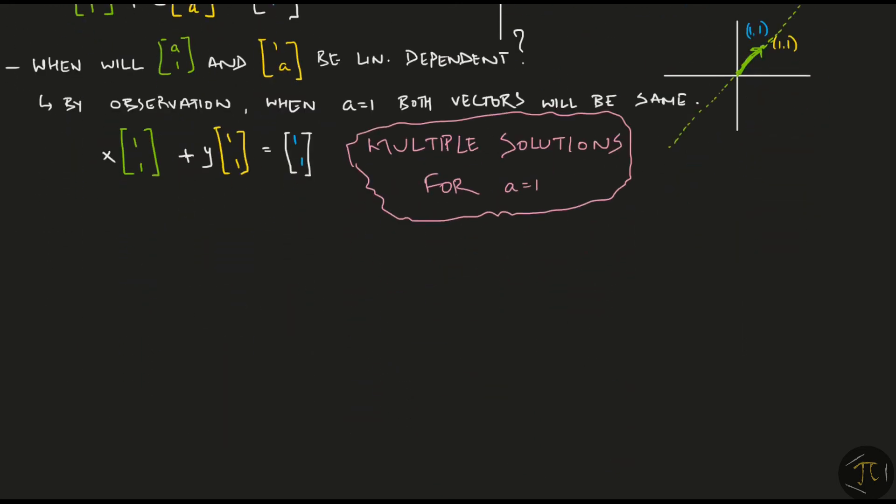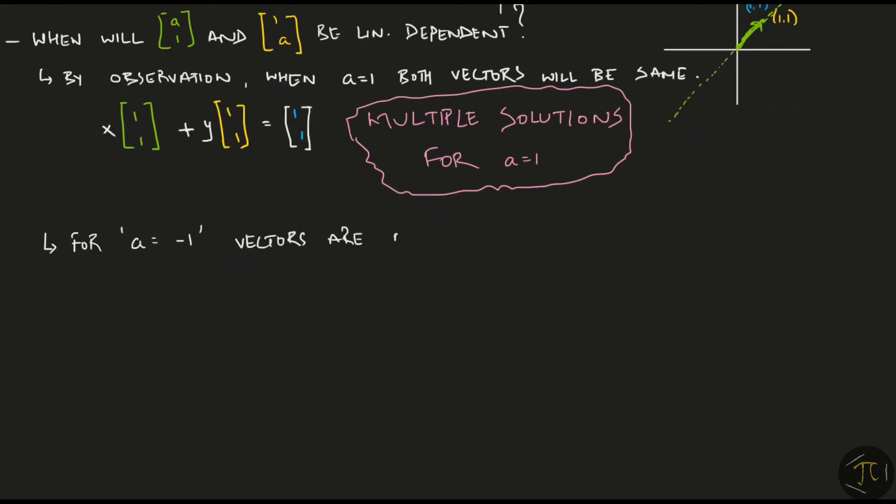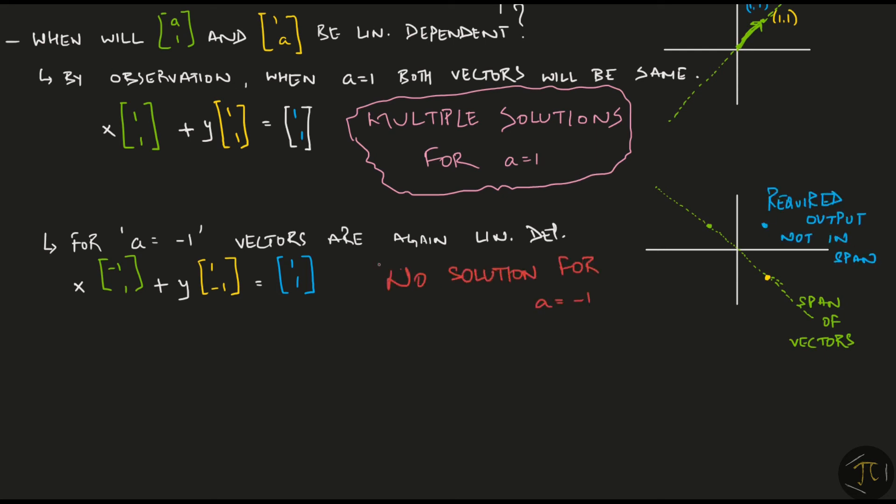Another observation I can make is that for a equal to minus 1, vectors are again linearly dependent. And now if I rewrite the equation using this value of a, we can say that the output vector is 1,1. Graphically, if I plot the two vectors, I can see the span this time is again a line, but the required output 1,1 is not in the span, which means no solution exists for a equal to minus 1.